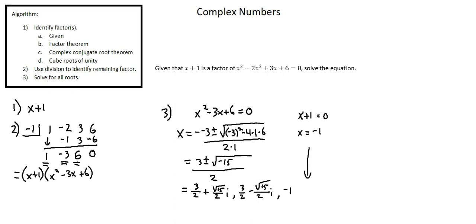Notice the application of the complex conjugate root theorem here. We have two complex solutions. One is the conjugate of the other: 3 over 2 plus root 15 over 2i, and 3 over 2 minus root 15 over 2i.